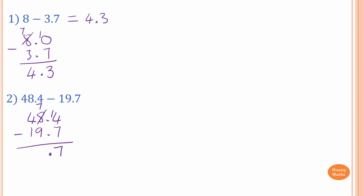And 7 take away 9 — we cannot do that, so we borrow 1 from 4. The 4 becomes 3, and the 7 becomes 17. 17 take away 9: 10 take away 9 is 1, and 7 is 8. Otherwise, you start from 9 and count up to 17 using your fingers: 9, 10, 11, 12, 13, 14, 15, 16, 17 — the answer is 8. And then 3 take away 1 is 2. So the answer is 28.7.